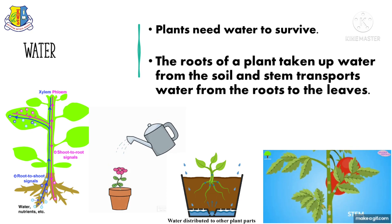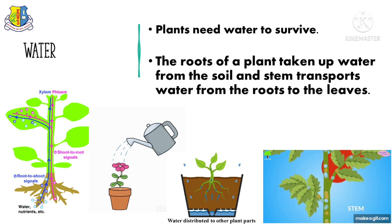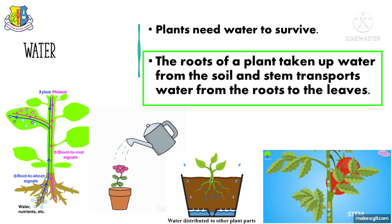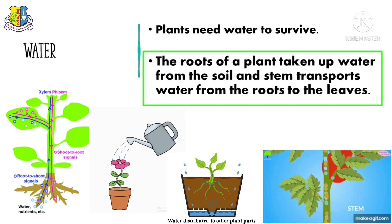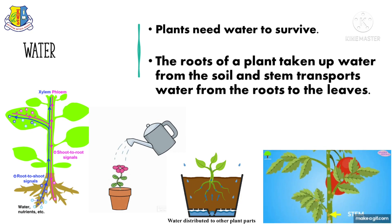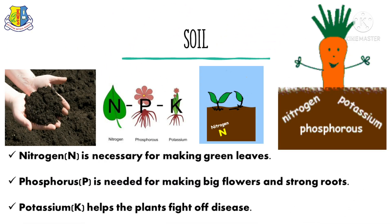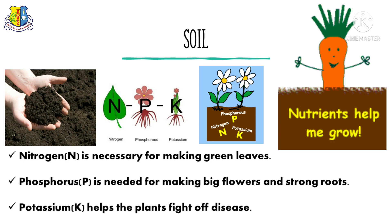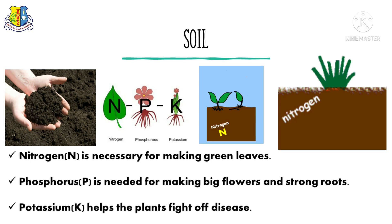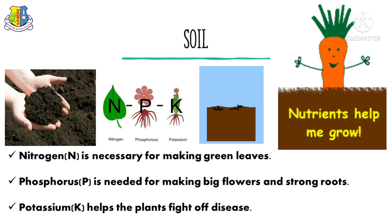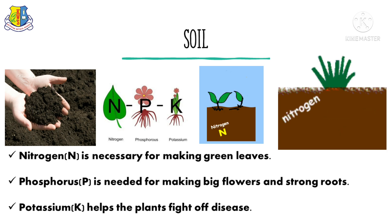The roots of a plant take up water from the soil, and the stem transports water from the roots to the leaves. Soil contains nutrients. The most important nutrients for plant growth are nitrogen, phosphorus, and potassium.